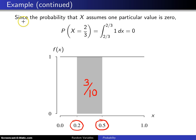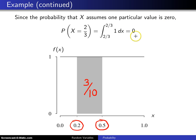The last thing asked in the question is the probability that x equals two-thirds — that's the probability that x assumes one particular value. You could just write this down as 0, because it's a continuous random variable. But if you integrate from two-thirds to two-thirds, you will indeed get 0.